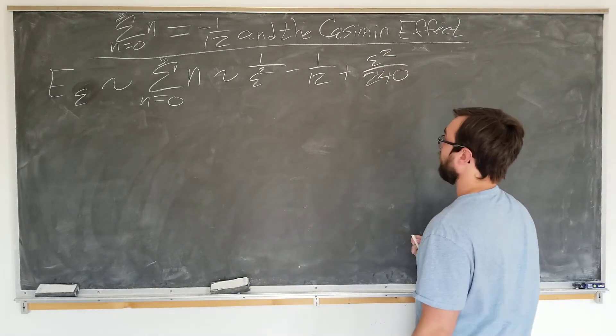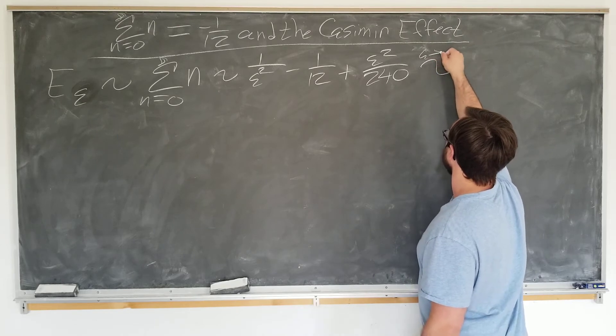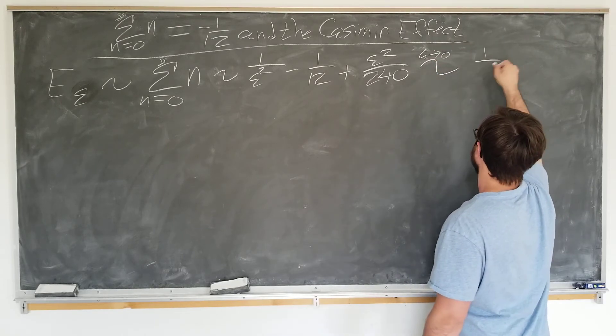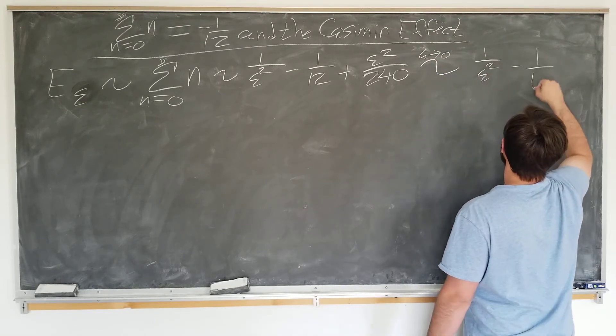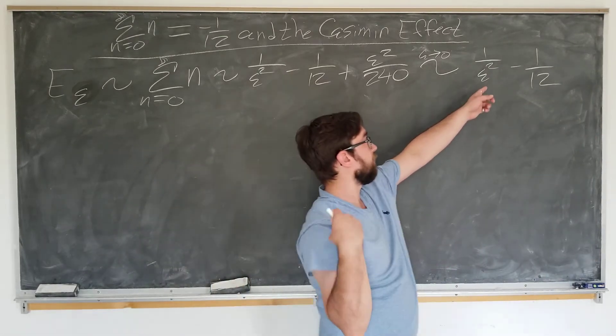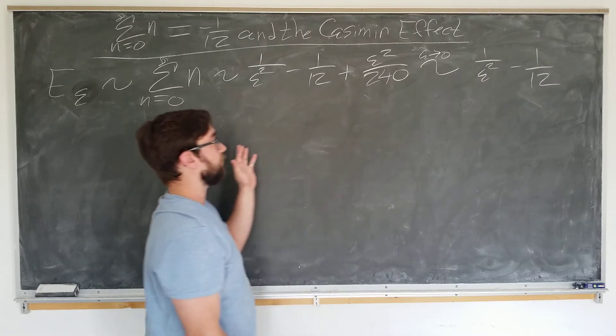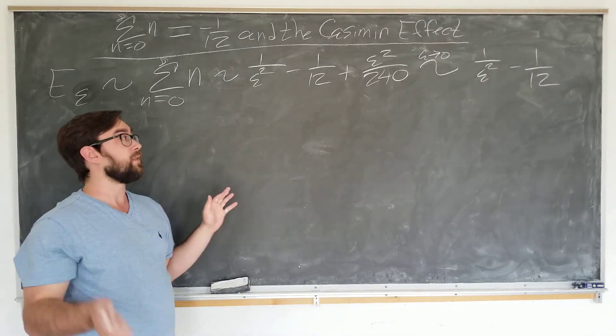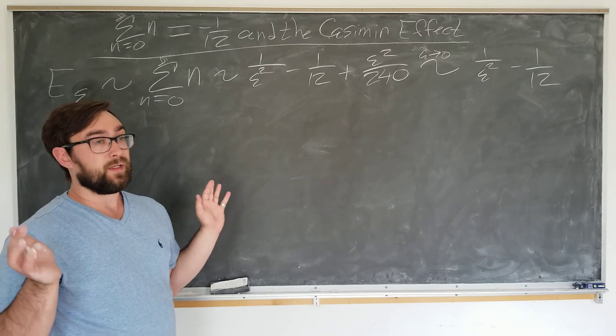Right? And we're going to let epsilon go to zero now. Becomes 1 over epsilon squared minus 1/12. Great. But we still have the infinity here. This tells us that the sum is equal to infinity minus one-twelfth. Isn't that still infinity? We haven't really done anything at all.